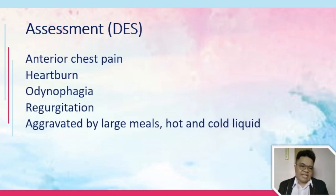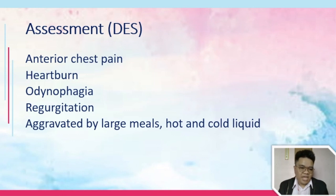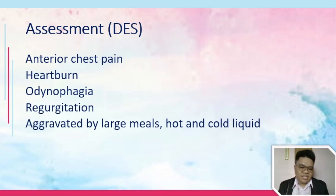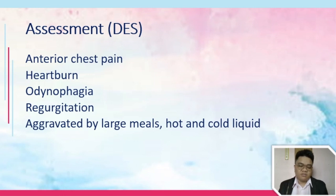For your DES or diffuse esophageal spasm, the patient would also have anterior chest pain, heartburn, odynophagia, and regurgitation. This is aggravated by large meals and hot and cold liquids, because extreme temperatures can trigger the spasms.